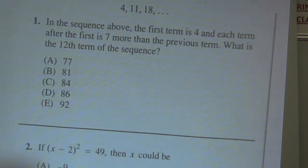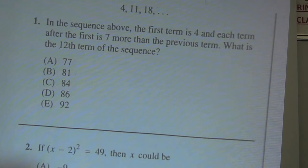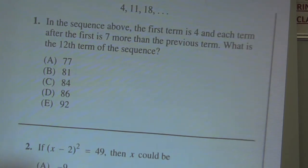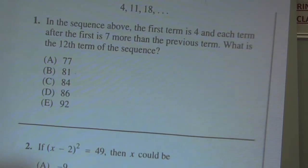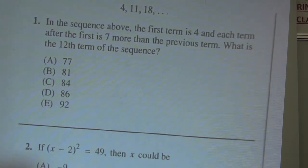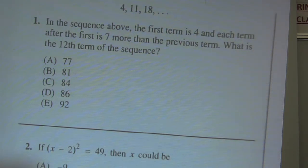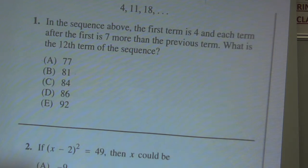Number 1: in the sequence above, the first term is 4, and each term after the first is 7 more than the previous one. So you can see it's going plus 7, plus 7, plus 7. What is the 12th term of this sequence? In Algebra 2, there is a chapter called Series and Sequences, and you can certainly use that here, but you don't need to. It's faster to just keep adding 7 to the terms until you get to the 12th term.